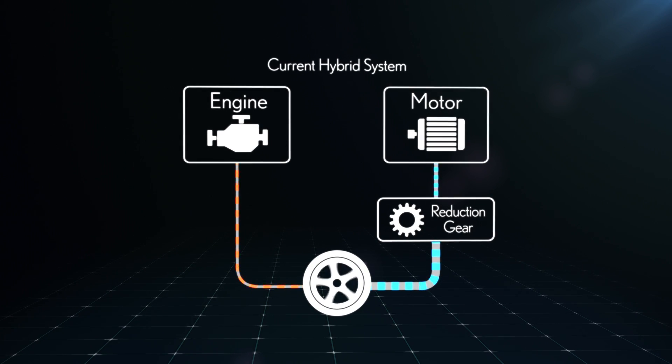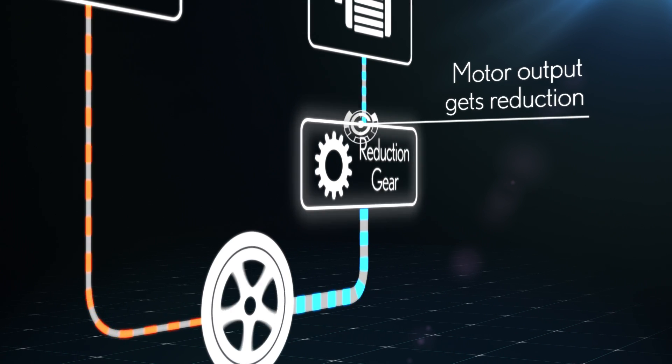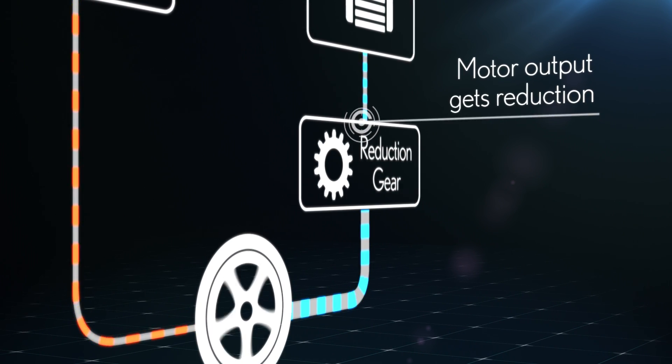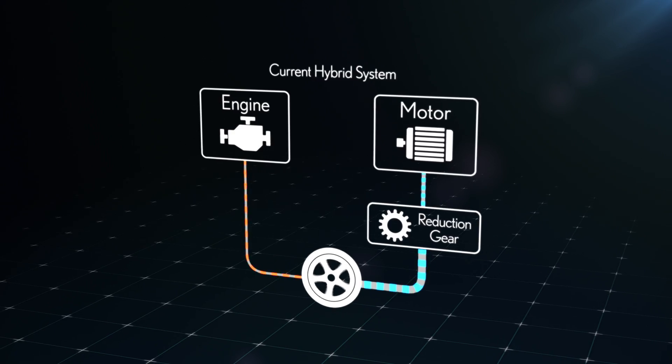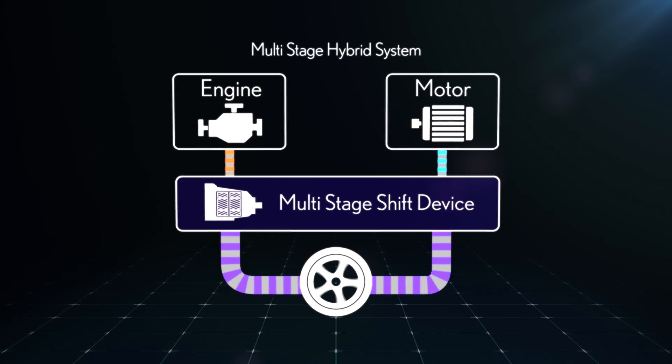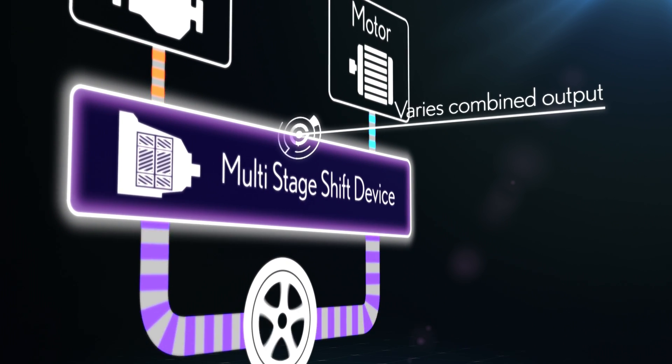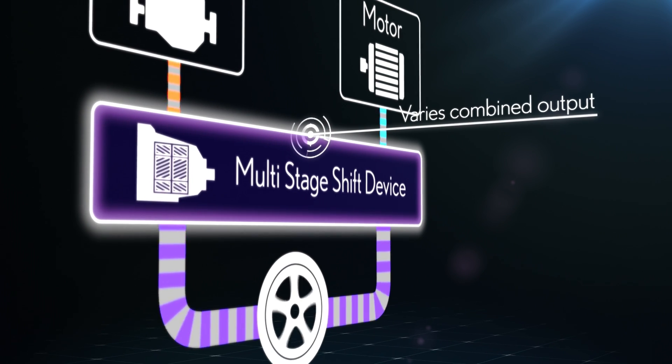The current Lexus hybrid system shifts the motor output by two-speed reduction gear. The multi-stage hybrid system is equipped with a multi-stage shift device that varies the combined output of the engine and motor.